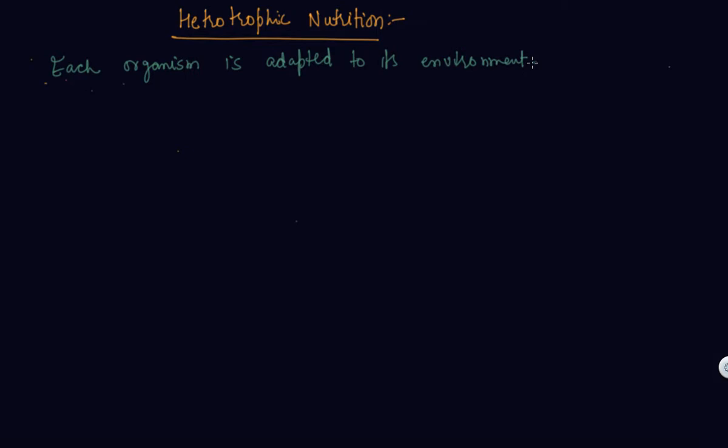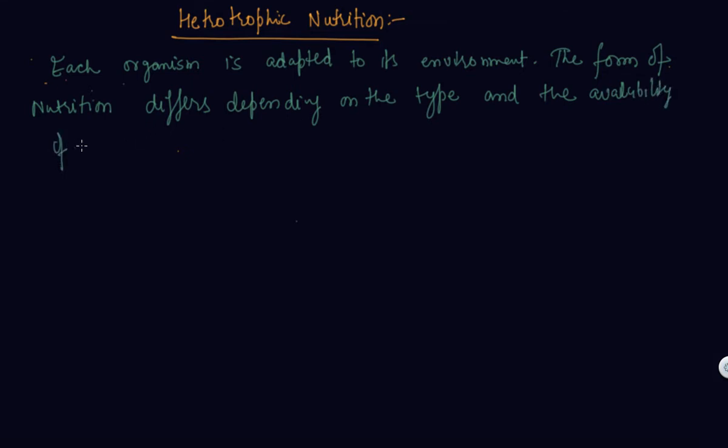The form of nutrition differs depending on the type and availability of food material as well as how it is obtained by the organism.